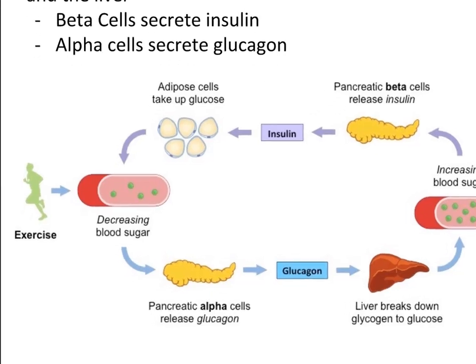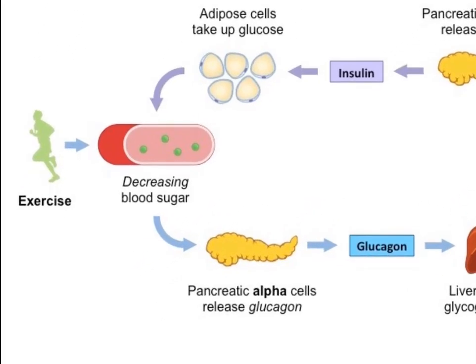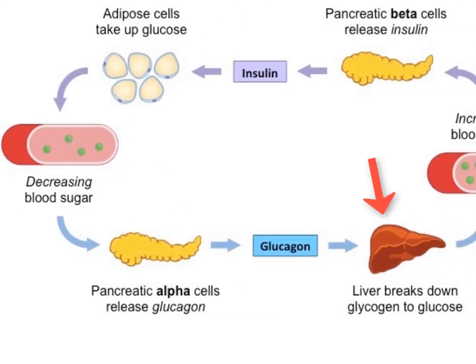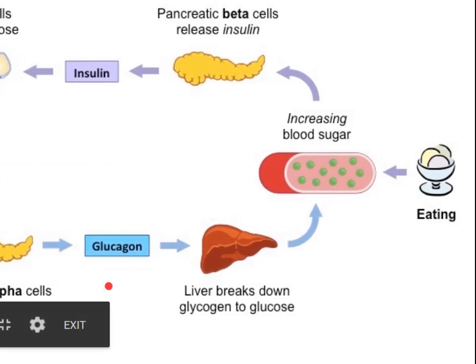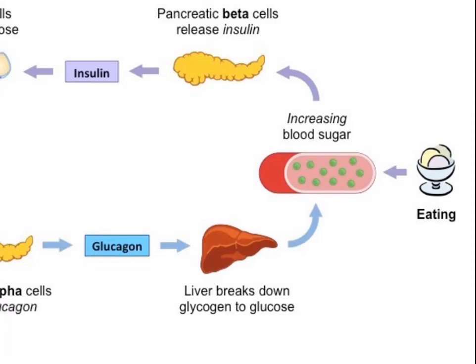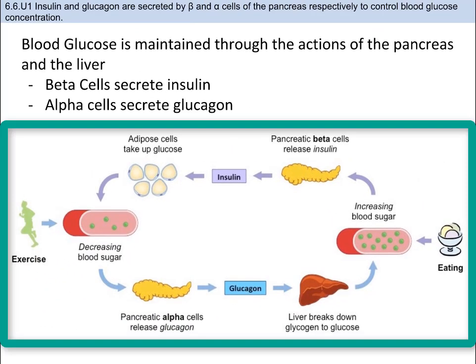About four to six hours after you eat, or depending on if you've exercised, the glucose levels in your blood decrease, triggering the alpha cells in your pancreas to produce glucagon. This hormone signals your liver and muscle cells to change the stored glycogen back into glucose. These cells then release the glucose into your bloodstream so your other cells can use it for energy. This whole feedback loop with insulin and glucagon is constantly in motion, like you see here.